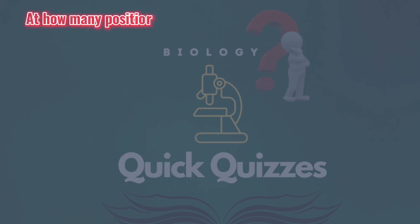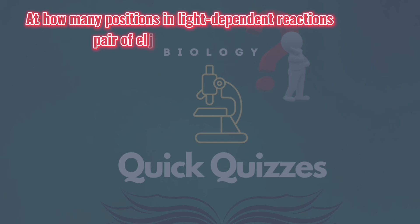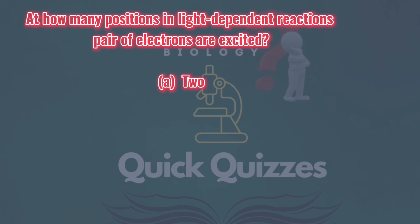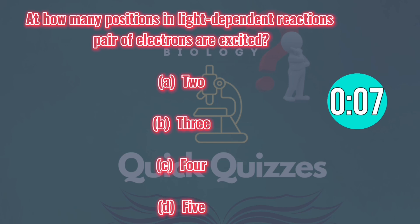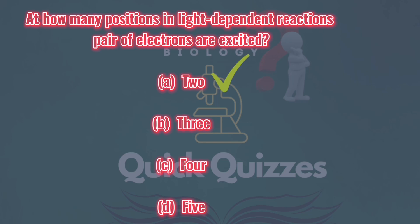At how many positions in light-dependent reactions are pairs of electrons excited? A) two, B) three, C) four, D) five. Correct answer: A, two.